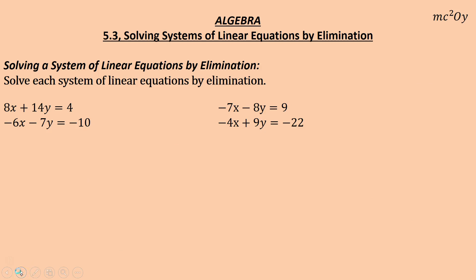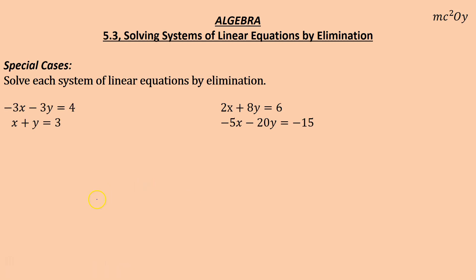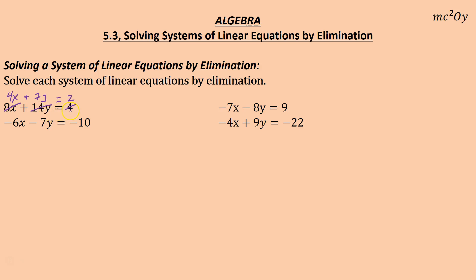Let's solve by elimination. Looking at 8x plus 14y equals 4 and negative 6x minus 7y equals negative 10: 8 and negative 6 are not opposites, 14 and negative 7 are not opposites. But I can reduce the top equation — take a 2 out of each term. Really you're multiplying by one half. 8x becomes 4x, 14y becomes 7y, and 4 becomes 2. So you've taken half of the top equation, and now you have opposites: 7y and negative 7y.